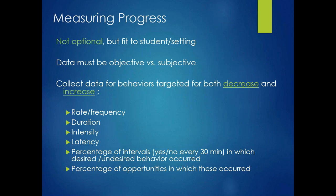Let's move to another essential component of an effective behavior plan: measuring outcome. This is not optional, but it needs to be fit to the setting and the student — it must be tailored. Data must be objective; it cannot be a subjective approach like 'I believe things were better last week.' We must have data. We should collect data for behaviors targeted for both increase and decrease — replacement behaviors, aggression, self-injury, tantrums. We want to see some decrease, we want to see others increase, and we need to be tracking both.